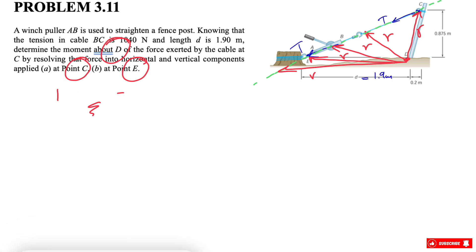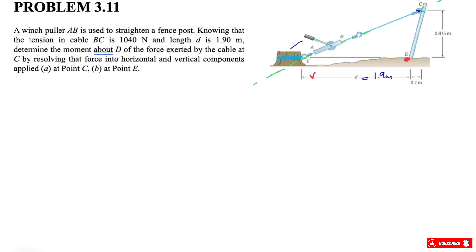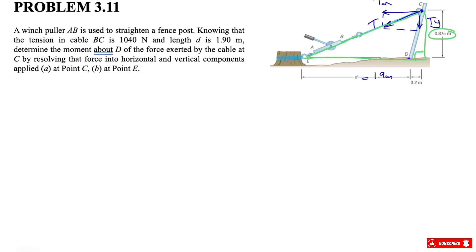Let's clean up and start finding the moment using our 2D shortcut. We'll compare the two cases at the end — they should match. Starting with tension T applied at C: using the 2D shortcut, we break forces into x and y components. We have a right triangle here, with one side 0.875 and the base being 1.9 plus 0.2, which equals 2.1.